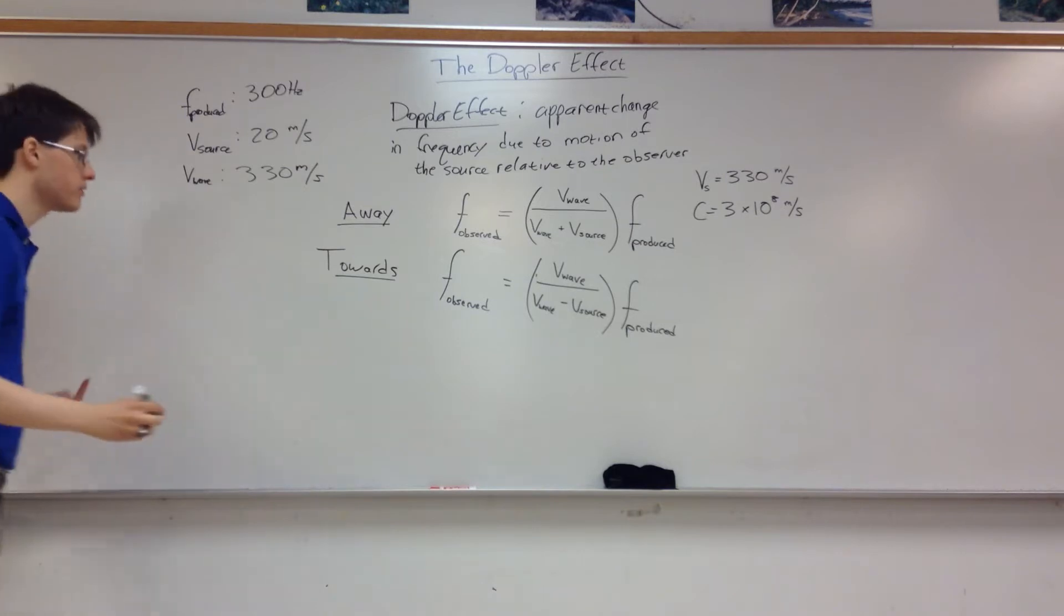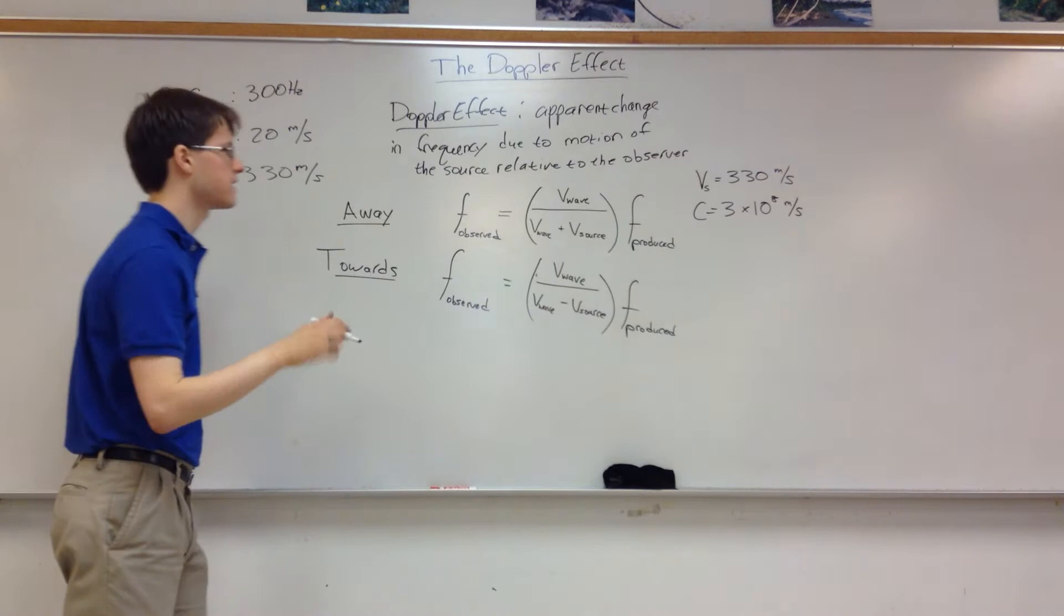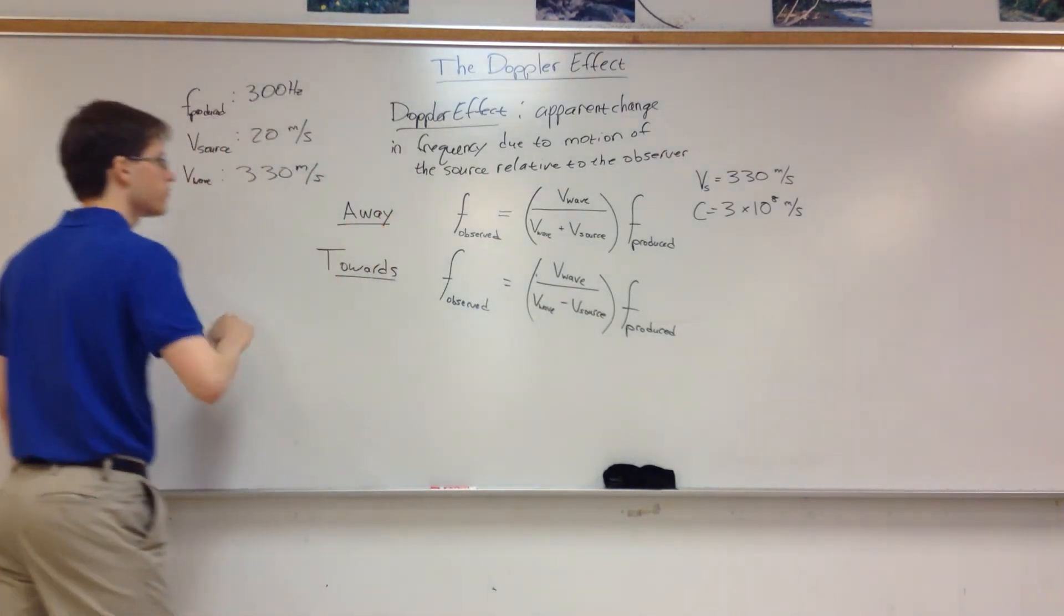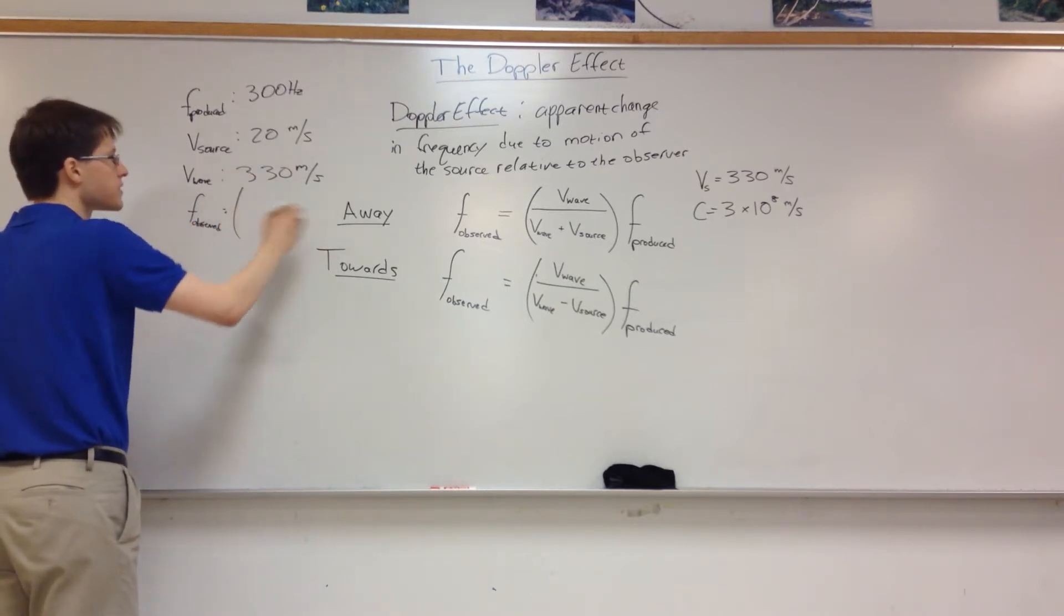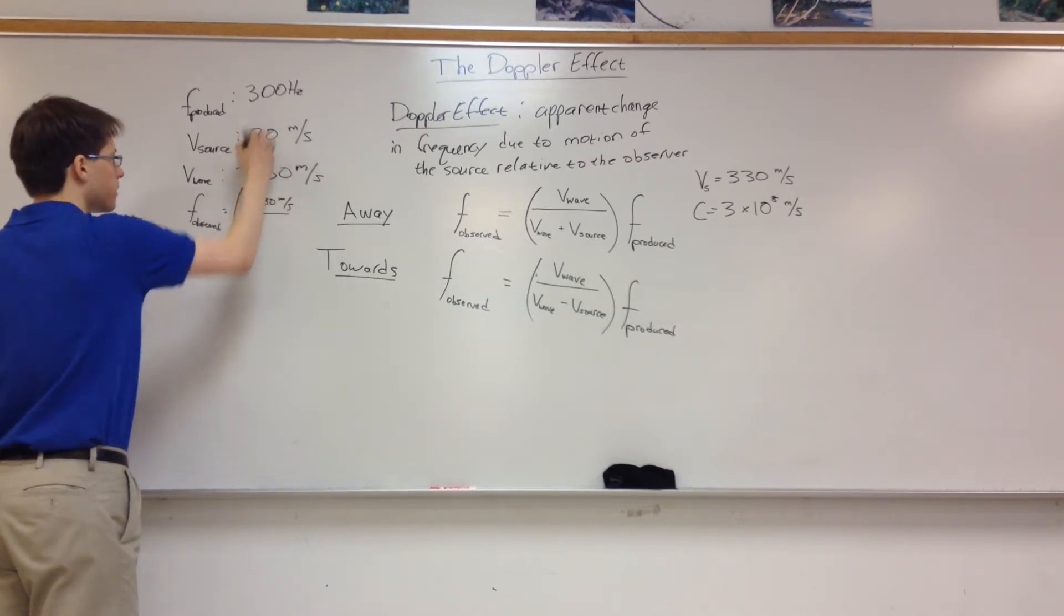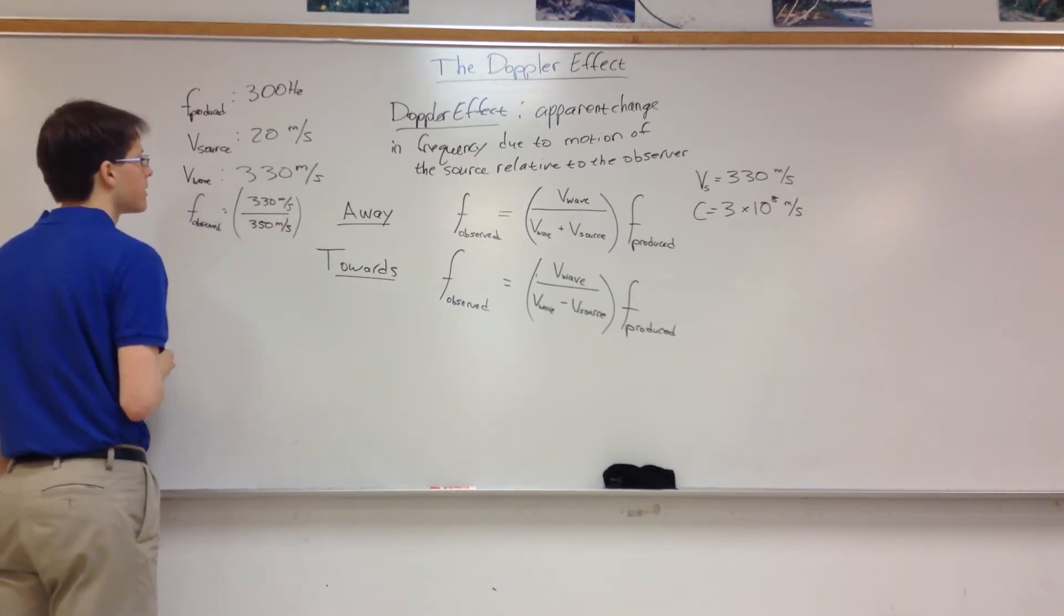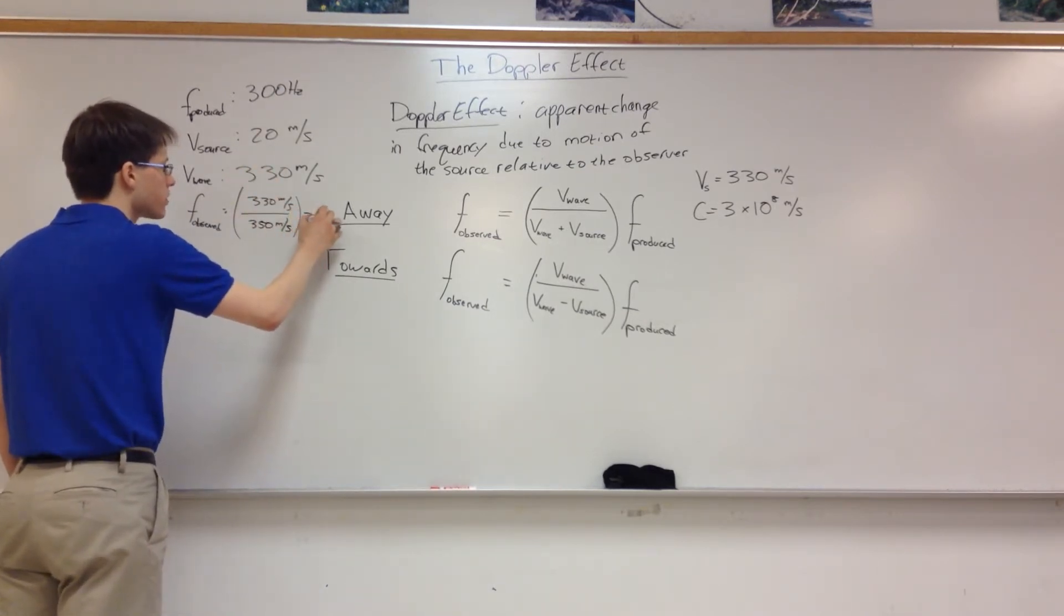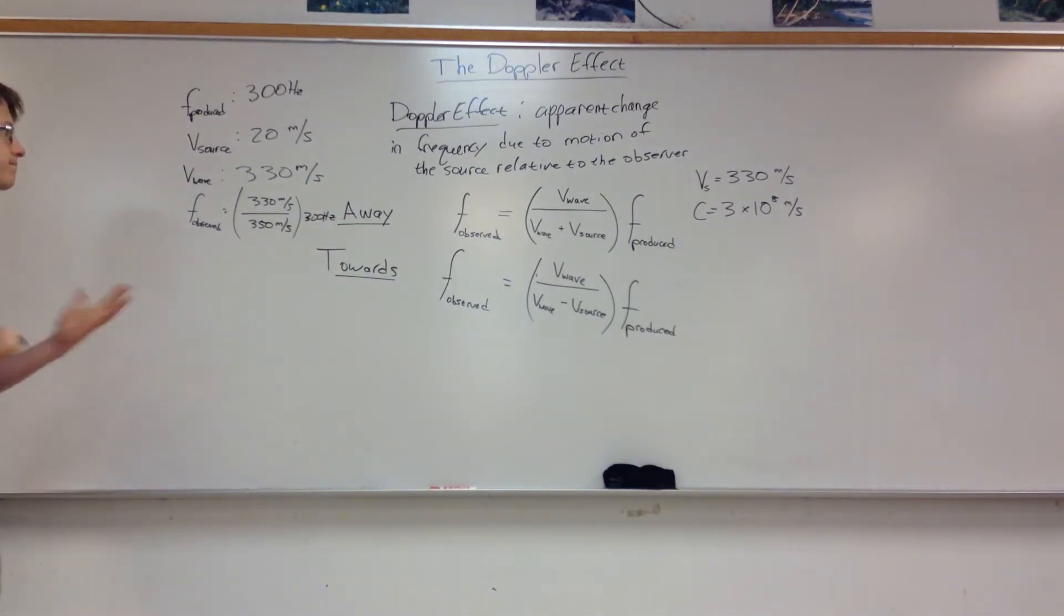So to figure out what frequency is observed, you just plug all this stuff in. So in this case, let's say it's moving away from you. So it's moving away from you because it's the top equation and you get frequency observed. It's going to be equal to the velocity of the wave, which is 330 meters per second, divided by 330 plus 20, so 350 meters per second. And you multiply that by the frequency produced, which is 300 hertz. And then you just plug it in and you get your observed frequency.